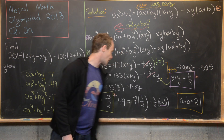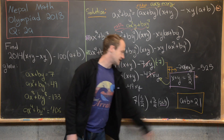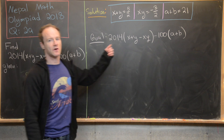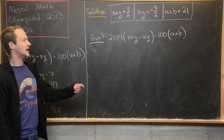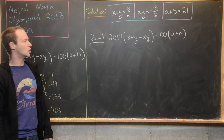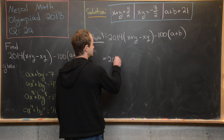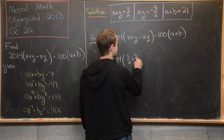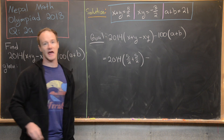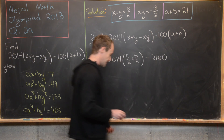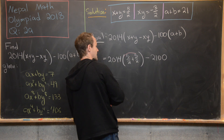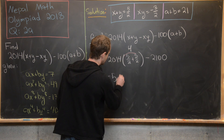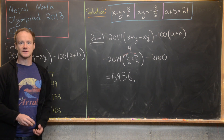Now we plug all three values into our goal expression: 2014·(x + y - xy) - 100·(a + b) = 2014·(5/2 - (-3/2)) - 100·21 = 2014·4 - 2100. Since 5/2 + 3/2 = 8/2 = 4, this simplifies to 2014·4 - 2100 = 8056 - 2100 = 5956. So the final answer is 5,956.